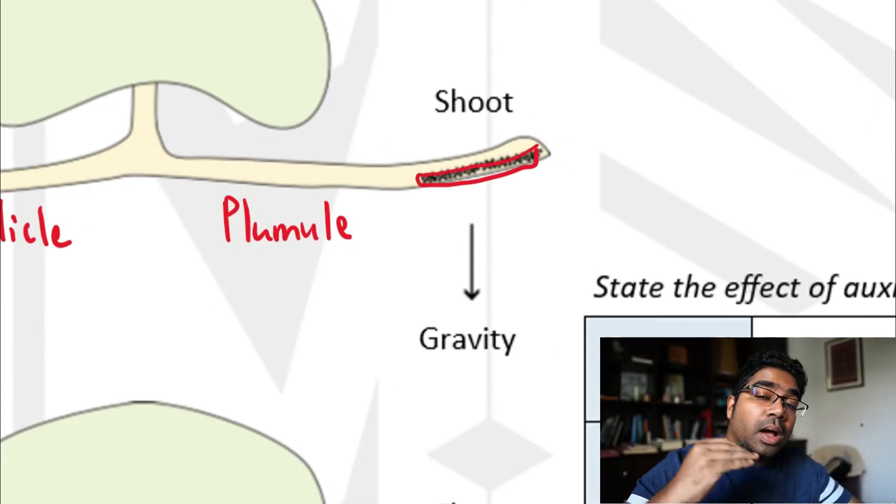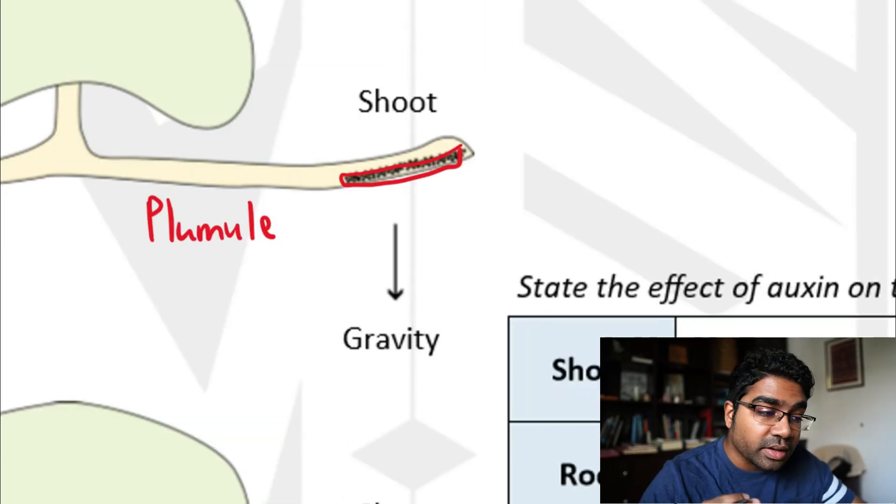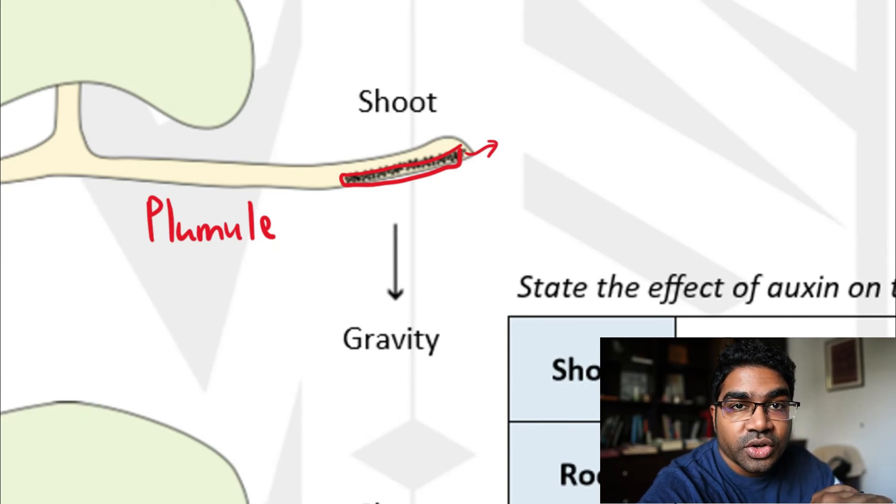have auxin at the bottom as well. However, the effect is the opposite—auxin stimulates cell elongation here, which means the bottom part is going to grow at a faster rate. Cell elongation is going to happen at a higher rate compared to the top.